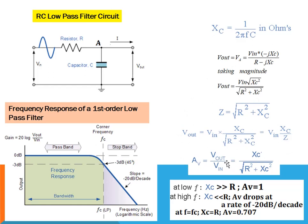Representing in terms of gain: V_out / V_in = X_C / √(R² + X_C²). This gain equation is essential for drawing the frequency response of this filter, which is a first order low pass filter. To plot the frequency response, we find the value of the gain at three different frequencies: at low frequency, at the cutoff frequency, and at high frequency.